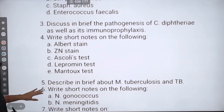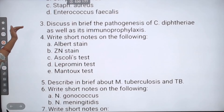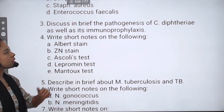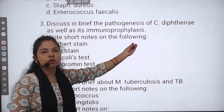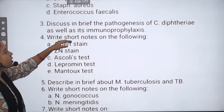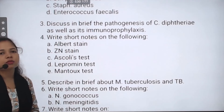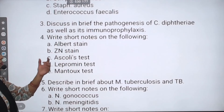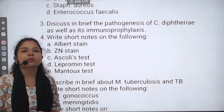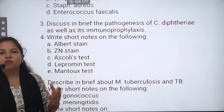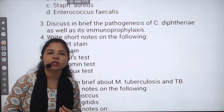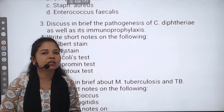Next question: Discuss in brief the pathogenesis of Corynebacterium diphtheriae, as well as its immunoprophylaxis. You need to cover how it causes harm and how immunoprophylaxis works. When writing pathogenesis, use a flowchart format — you will get marks for the flowchart.